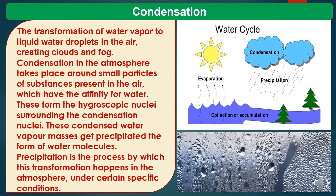Now, condensation. Condensation is the transformation of water vapor to liquid water droplets in the air, creating clouds and fog. Condensation in the atmosphere takes place around small particles of substances present in the air which have an affinity for water. These form the hygroscopic nuclei surrounding the condensation nuclei. These condensed water vapor masses then get precipitated in the form of water molecules. Precipitation is the process by which this transformation happens in the atmosphere under certain specific conditions.